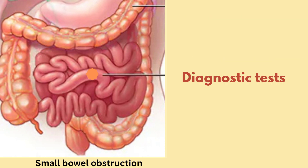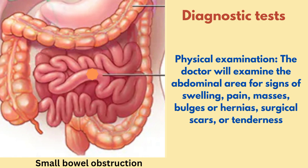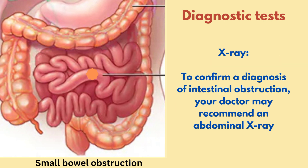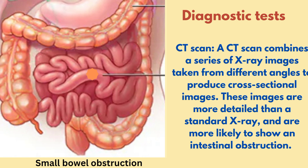Now let us see the diagnostic tests. Physical examination: the doctor will examine the abdominal area for signs of swelling, pain, masses, bulges or hernias, surgical scars, or tenderness. The next diagnostic test is X-ray — to confirm a diagnosis of intestinal obstruction, your doctor may recommend an abdominal X-ray. The next diagnostic test is CT scan, which combines a series of X-ray images taken from different angles to produce cross-sectional images. These images are more detailed than a standard X-ray and are more likely to show an intestinal obstruction.